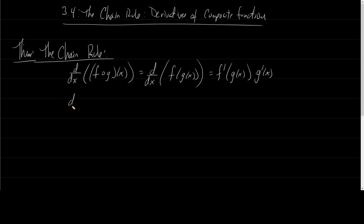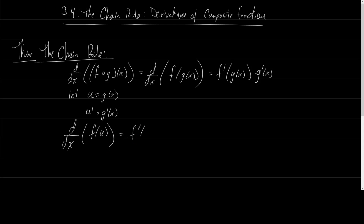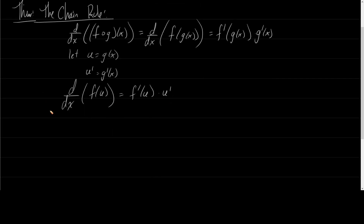Another way to think about this: if I let u be equal to g of x, then u prime would be equal to g prime of x. The derivative with respect to x of f of u would be f prime of u times u prime. Another way to write this in different notation would be dy/dx equals dy/du times du/dx. These are all just different ways to think about the same exact thing — that is the chain rule.